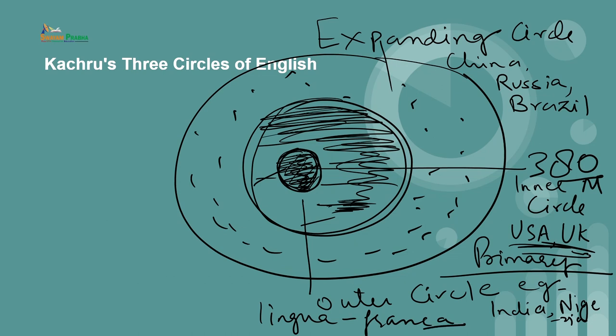The outer circle was produced by the second diaspora of English, spreading the language through imperial expansion by Great Britain in Asia and Africa. Britishers came into these countries, imposed their education system, and with it brought English language — that is how these countries adopted English as dominant in administration and other important purposes. In these regions English is not the native tongue but serves as a useful lingua franca between ethnic and language groups. Higher education, the legislature, judiciary, and national commerce may all be carried out predominantly in English.